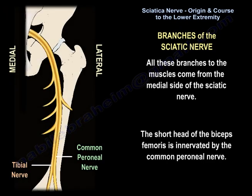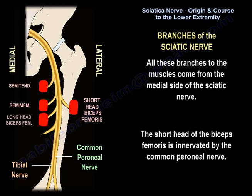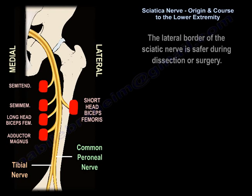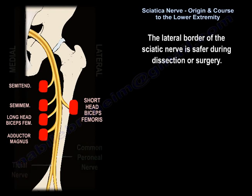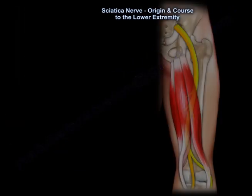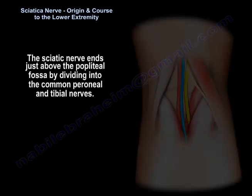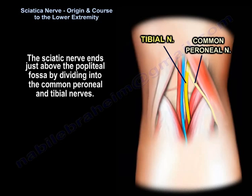The short head of the biceps femoris is innervated by the common peroneal nerve. The lateral border of the sciatic nerve is safer during dissection or surgery. The sciatic nerve ends just above the popliteal fossa by dividing into the common peroneal nerve and the tibial nerve.